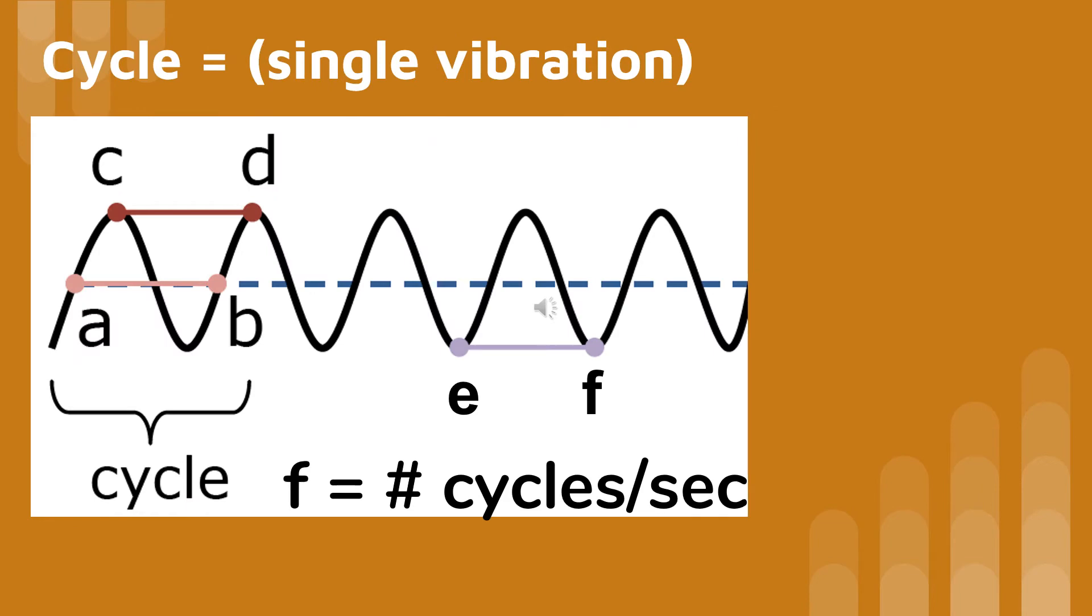Frequency is the number of cycles per second, and a cycle is a single vibration. You can see on the picture that we can measure a cycle from A to B, C to D, which is crest to crest, or E to F, which is the trough or the low point, trough to trough.